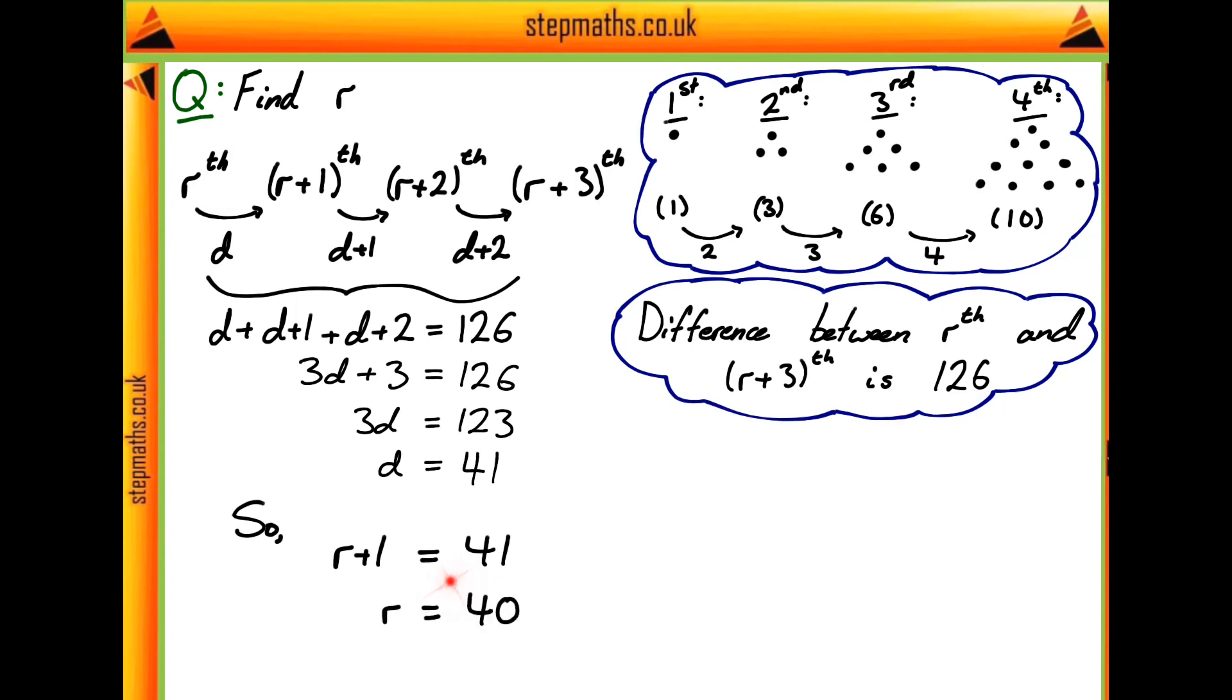Therefore, to find r, all we've got to do is take 1 from both sides, giving us an r value of 40, which corresponds to answer B given in the question.